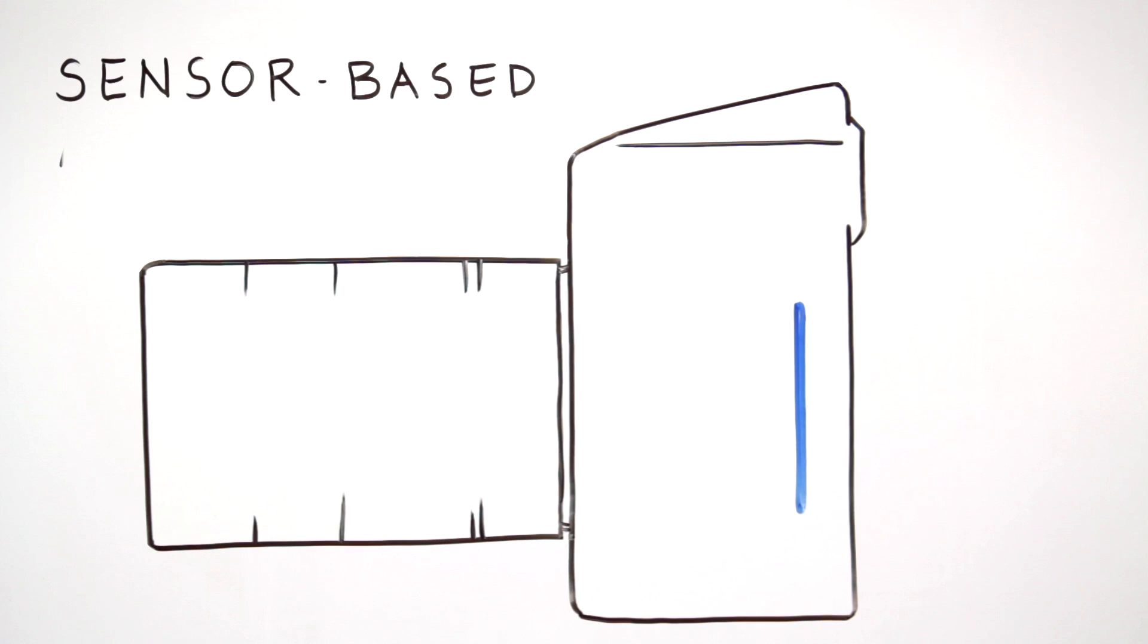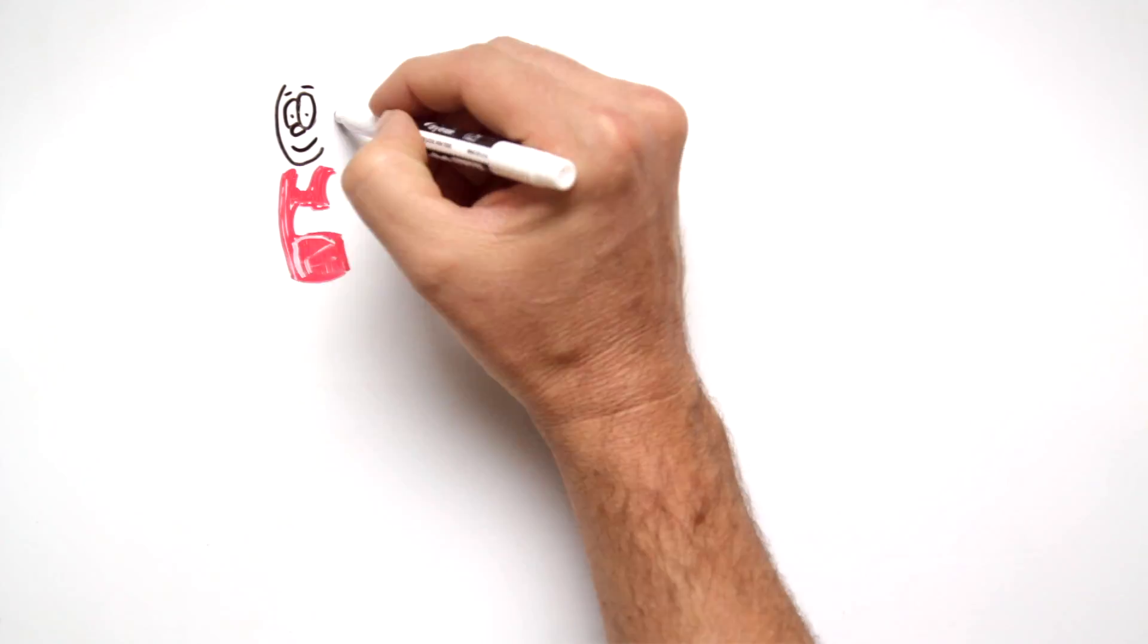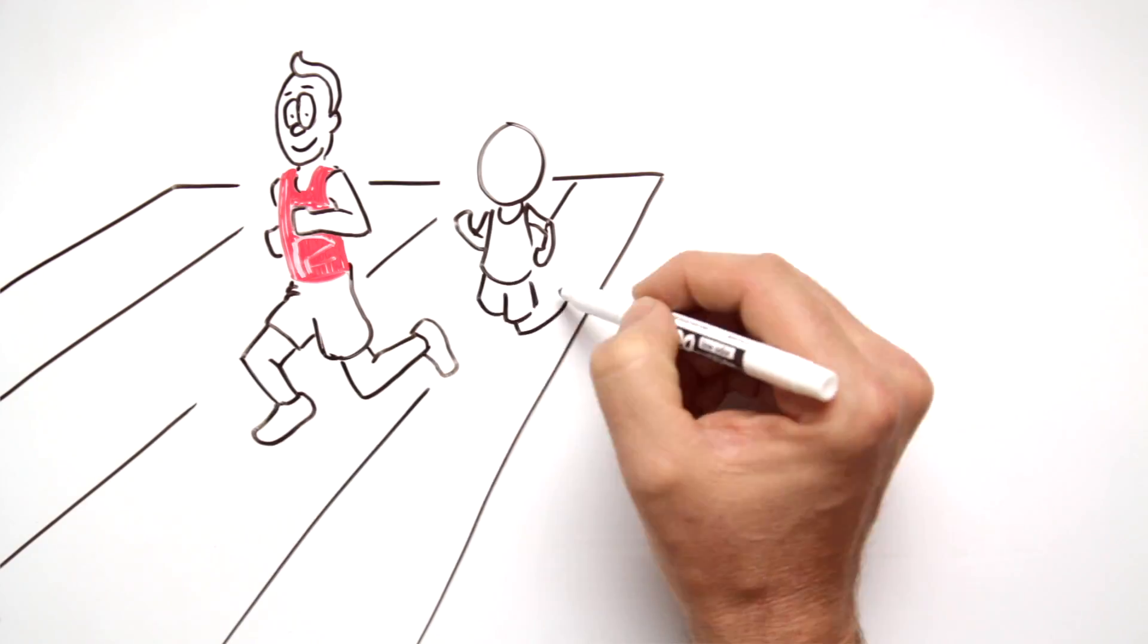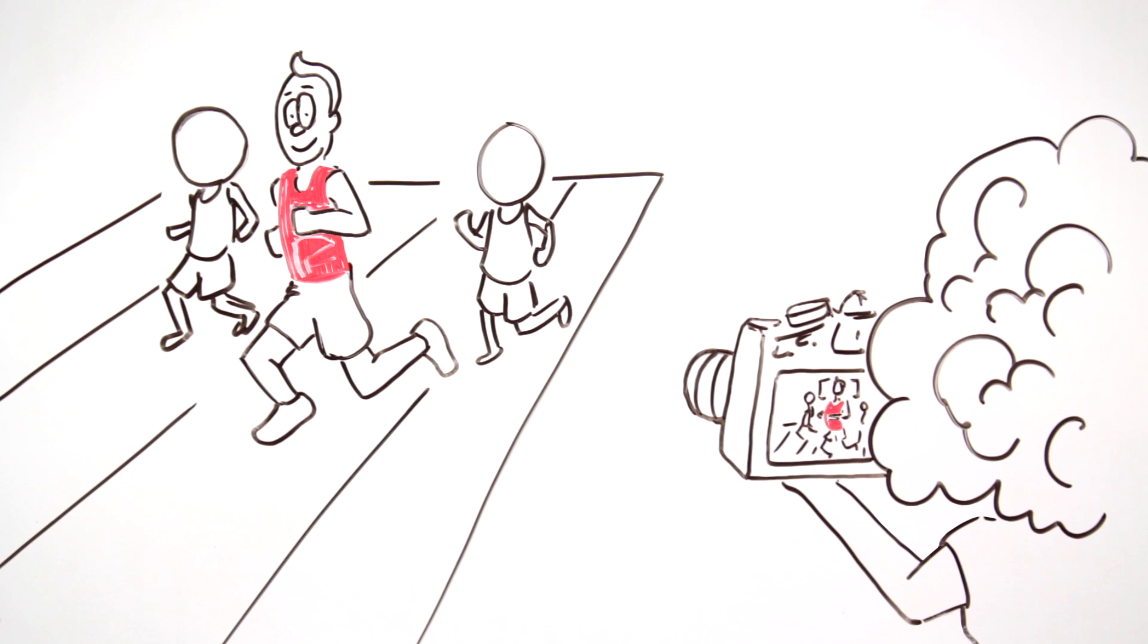Sensor-based autofocus systems use the camera's sensor for both focus and image recording. Canon's cutting-edge dual-pixel CMOS AF system allows for high-speed, accurate autofocus while shooting video or photos in live-view mode.